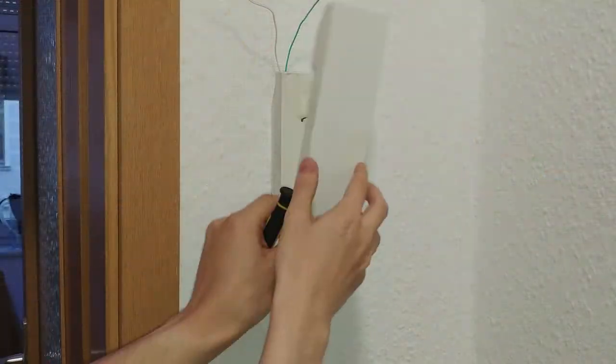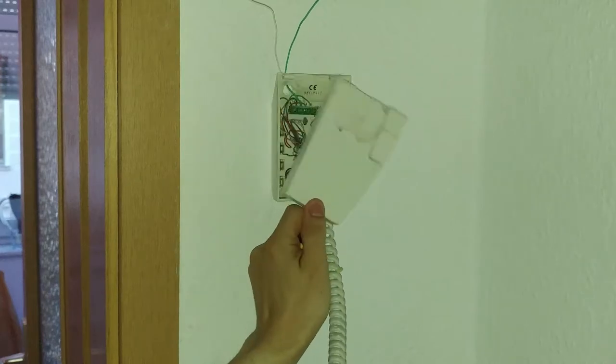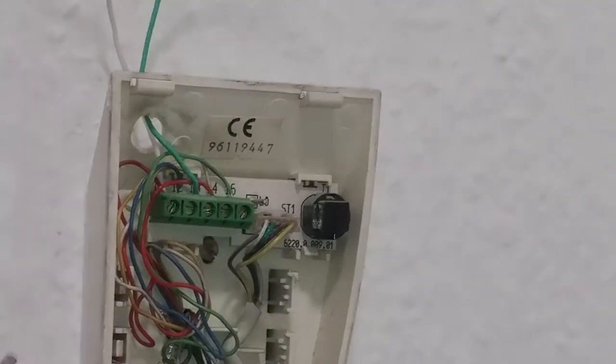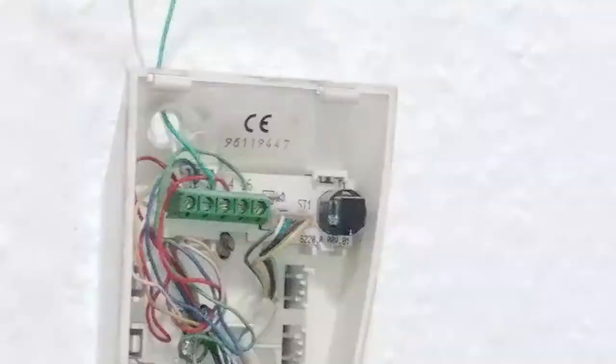The way I connected this module to open the downstairs door to my apartment was by opening the intercom and finding the two wires that open the door when connected.